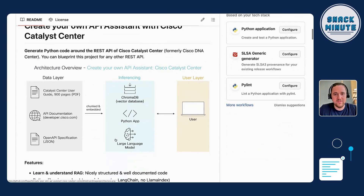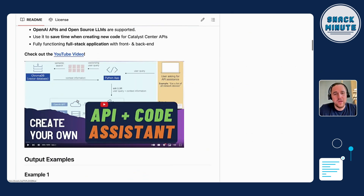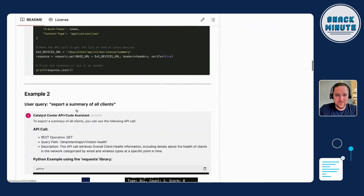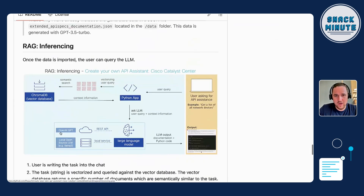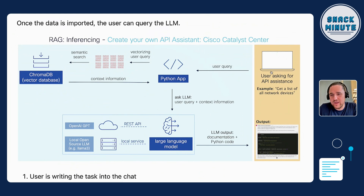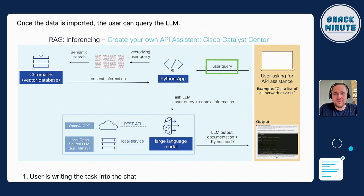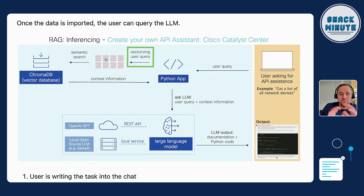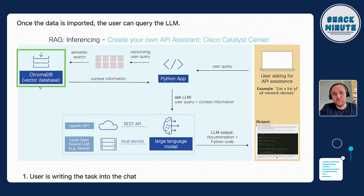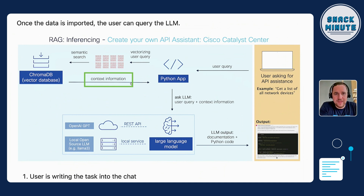I'll scroll down here — there's a repository, I created a video on this specific project, a YouTube video and even a learning lab. Let me go through the summary of how RAG actually works. You are the user, asking for assistance — for example, 'get a list of all network devices' or 'get me all the VLAN names.' The query is then vectorized into numbers, into vectors, and then the vector DB does a semantic search against this user query. Here I use ChromaDB as the vector database, which compares the context information regarding VLAN details and the correct API specification calls.